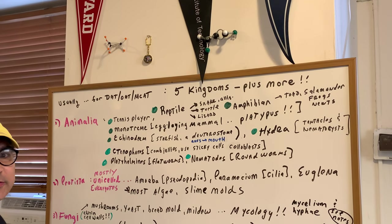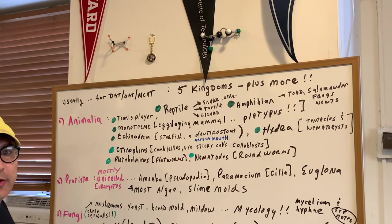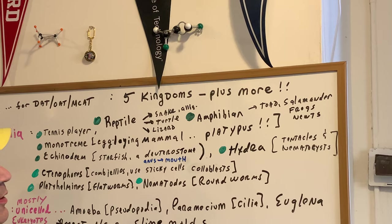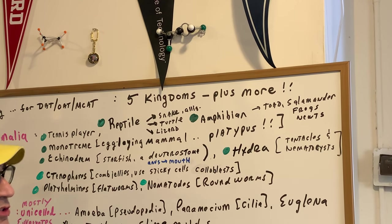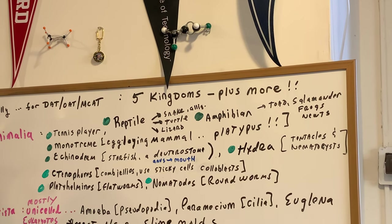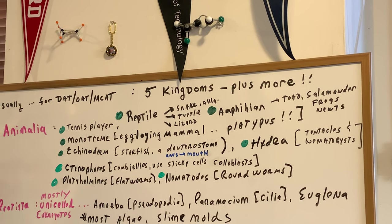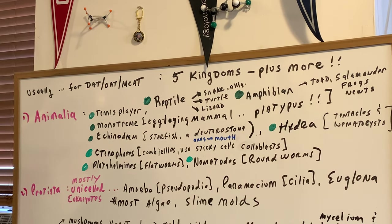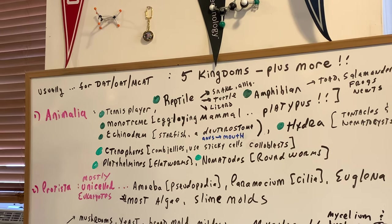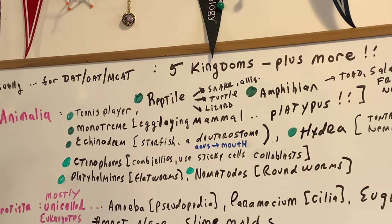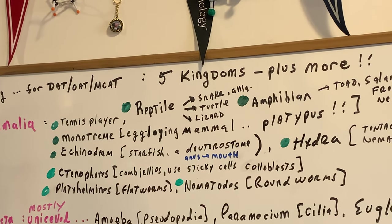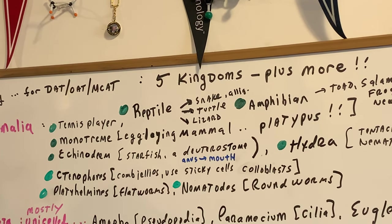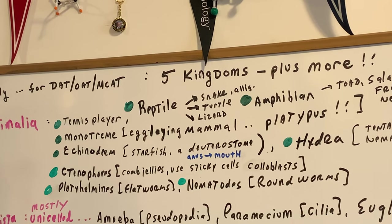Amphibians are always a DAT and OAT question. They include things like toads, salamanders, frogs, and newts. If you go to my bio notes, you'll see some nice pictures of those. Monotremes — that's a new one. What's a monotreme? That's an egg-laying mammal. A good example would be an anteater or a platypus.